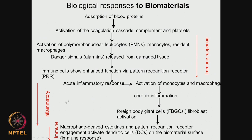We have the inflammatory response: acute inflammation leads to activation of monocytes and macrophages; chronic inflammation leads to foreign body giant cells and fibroblast activation. This feeds into immune response — macrophage-derived cytokines and pattern recognition receptor engagement activate dendritic cells on the biomaterial surface. All these cells are trying to engulf the biomaterial. As soon as blood proteins get adsorbed, we have both the immune response and the inflammation response — many things start happening.